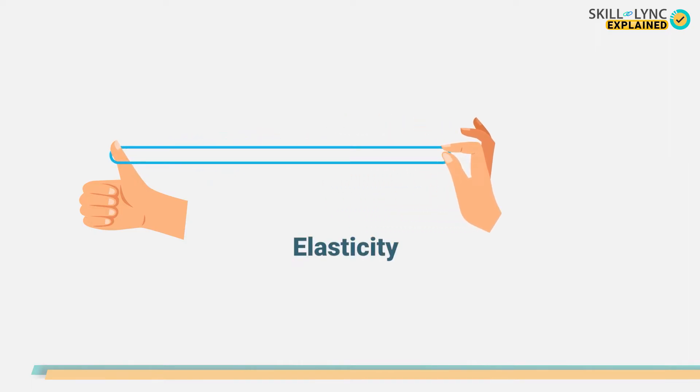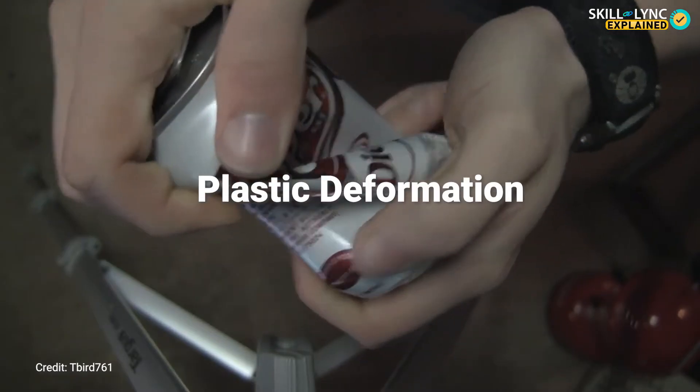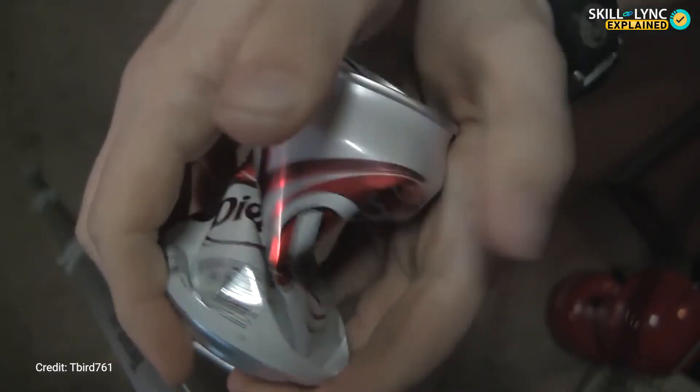But elasticity isn't always permanent. When the stretching force exceeds a certain limit, the deformation stays and the material remains deformed even after the removal of force. This condition is known as plastic deformation. In this video, we are going to discuss the mechanisms of plastic deformations, especially in crystals. So let's get started.